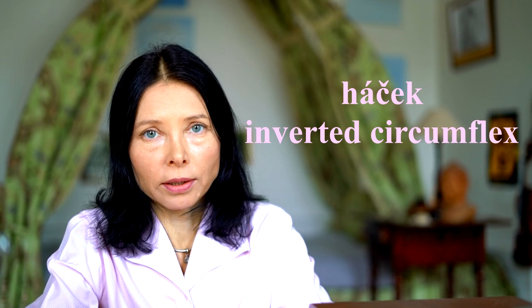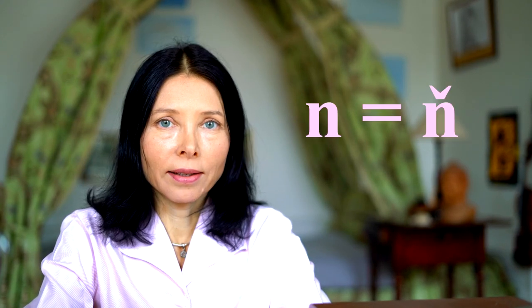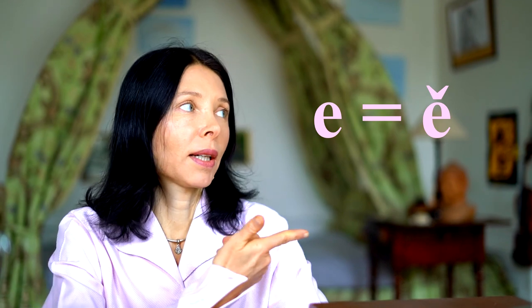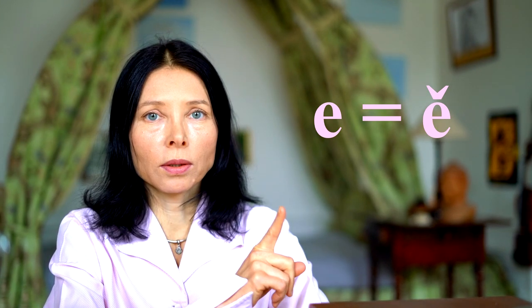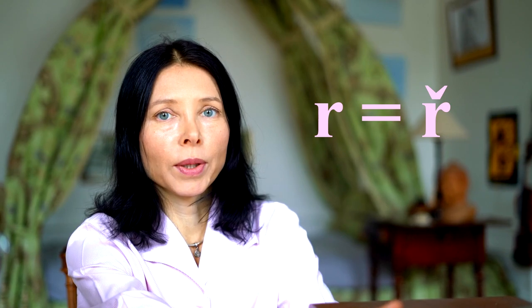More about the inverted circumflex — the háček. It is used with certain letters to form new characters. They are not new, but they sound differently from the original. So: s becomes š, z becomes ž, z becomes ž, c becomes č, n becomes ň, e becomes ě. This is the only vowel which has the inverted circumflex over it — otherwise it is dedicated to consonants. R becomes ř and d becomes ď.